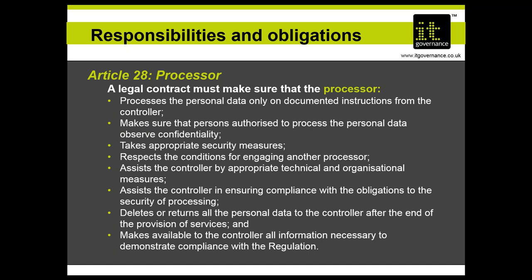The processor carries out processing on behalf of a controller. If the means of processing includes a third party, then the controller must by law have a contract with the processor. The processor, by law, can only process data on the documented instructions of the controller and must take steps to ensure that those processing the data observe confidentiality, and that the processor takes appropriate security measures — all driven by the controller. The controller has to be able to say to a processor what controls to implement, or specify the security levels to be achieved. Critically, if there is a data breach at the processor, it is the controller that will be on the hook.